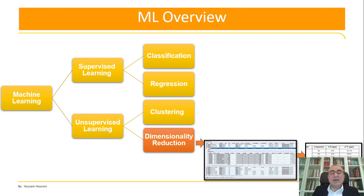You have data that you want to reduce. Dimensionality reduction means reducing the number of features. Suppose you have a dataset with 20 or 30 columns — the question is: can you reduce those 20 or 30 features into just five, six, or even two features so you can visualize it, deal with it, and understand it more?